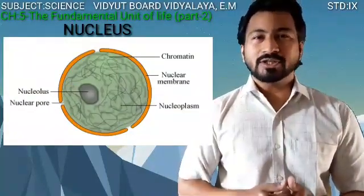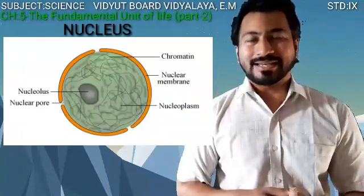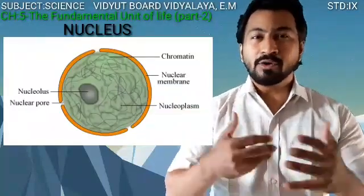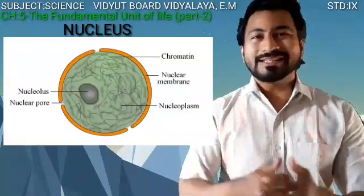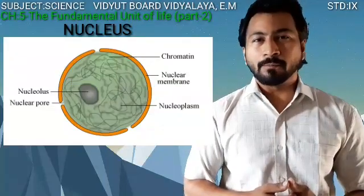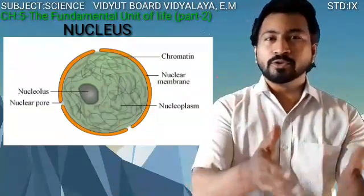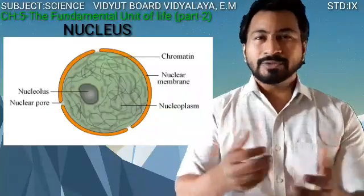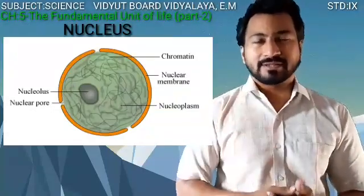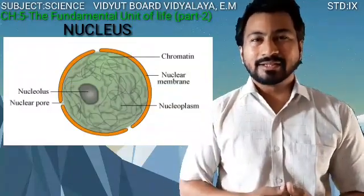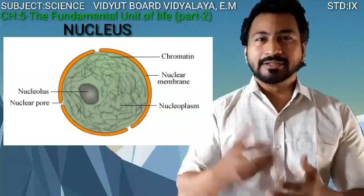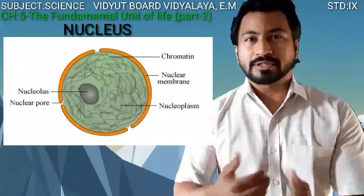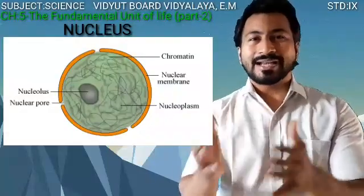Going into the inner side of the nucleus, we find the fluid of the nucleus, which is called the nucleoplasm. Materials can easily flow from the cytoplasm to the nucleoplasm through the minute pores present in the nuclear membrane. This nucleoplasm mainly consists of two major regions: the nucleolus and the chromatin.